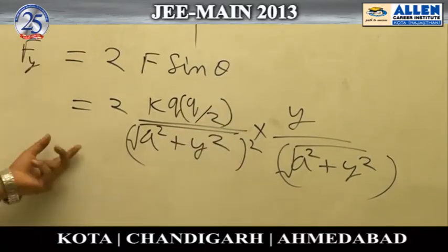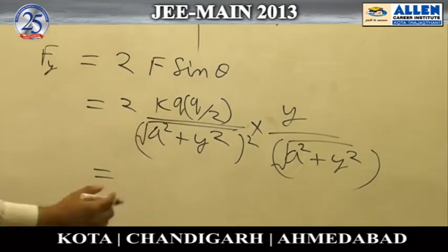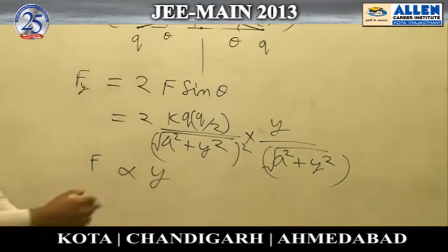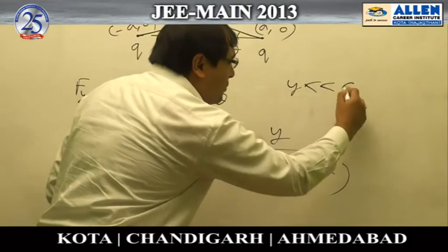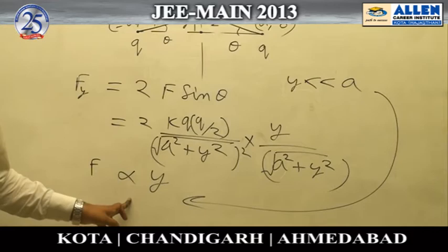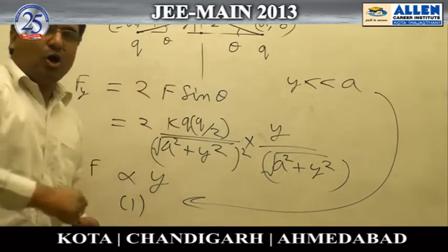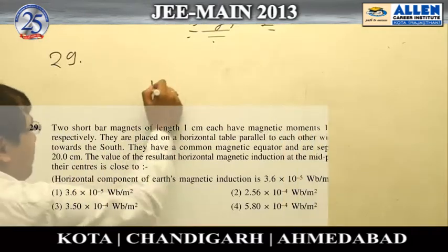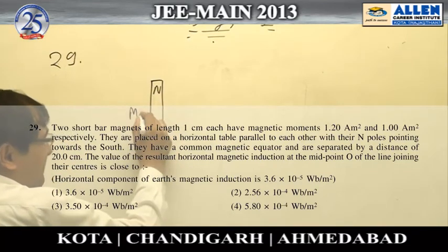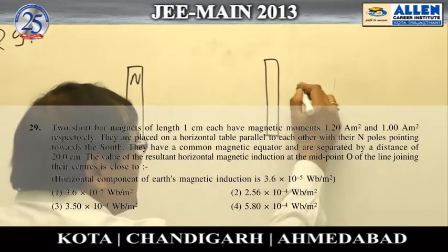When we simplify this and take the appropriate approximation — since y is much much smaller than a — we find that the net force is directly proportional to y. Applying this approximation gives the direct result, which makes the first option the correct answer.